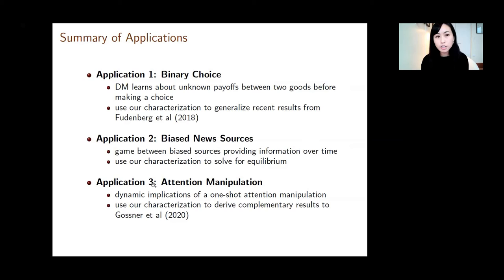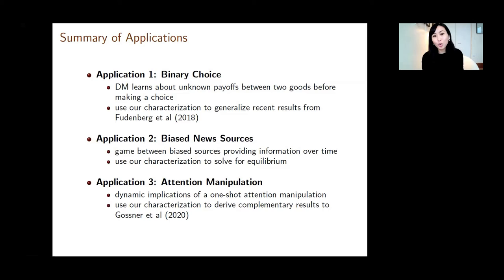Application three is not a generalization but a complementary result to a recent paper by Gossner et al. about attention manipulation. Suppose the decision maker doesn't get to control their attention at every moment of time, but instead somebody forces the decision maker to pay attention to one of the sources — you can then ask how that one-time attention manipulation affects the subsequent path of attention allocation. That's something we can directly use our results to study.